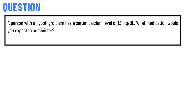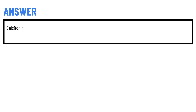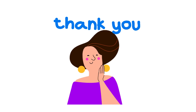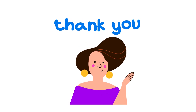Today's question is: a person with hypothyroidism has a serum calcium level of 13 mg/dL — what medication would you expect to administer? The correct answer to the question is calcitonin.